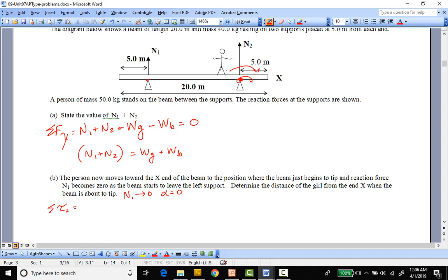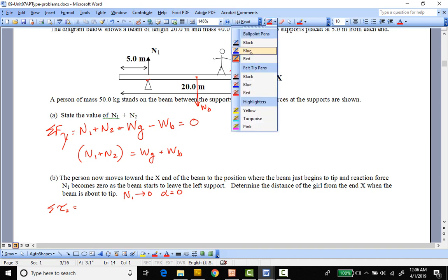At here we have our normal force going up. Our person is now over here somewhere. So the weight of the girl is over there. We still have the weight of our beam in the center over here. That would be for weight of the bar. And we said normal force due to one goes to zero. So let's look at some of these distances and just label them on here, just so we have them.